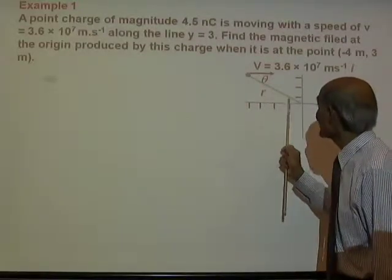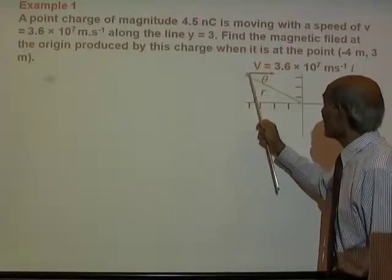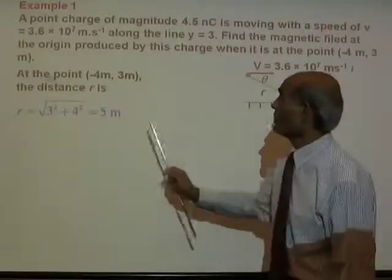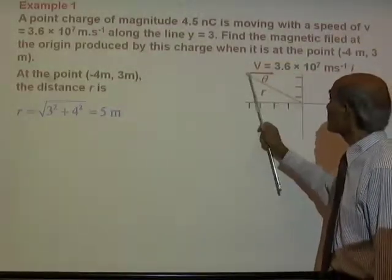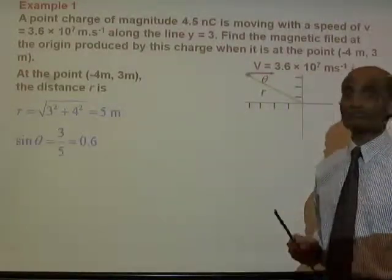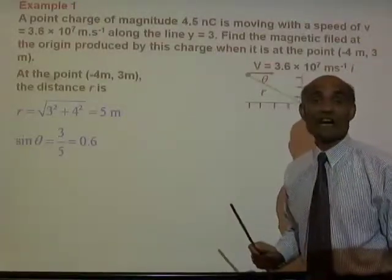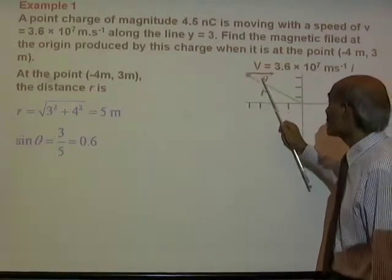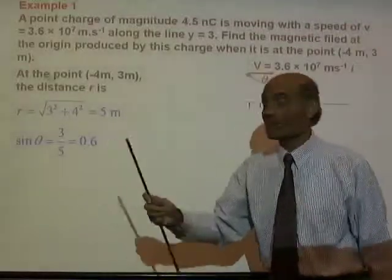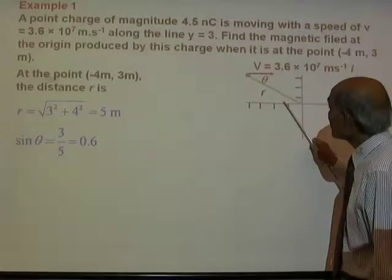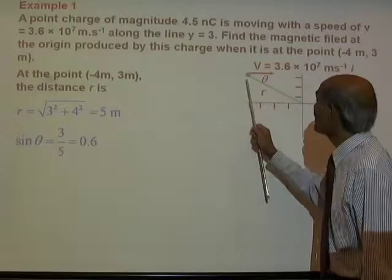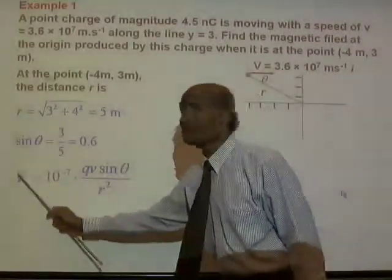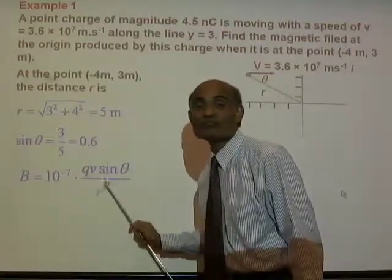First we need to figure out the length of the r vector. The r vector is the hypotenuse, so r equals the square root of 3 squared plus 4 squared, which equals 5 meters. Now we also want angle theta — the angle between the velocity vector and the r vector. Sine theta is opposite side divided by hypotenuse: sine theta equals 3 divided by 5, which is 0.6.